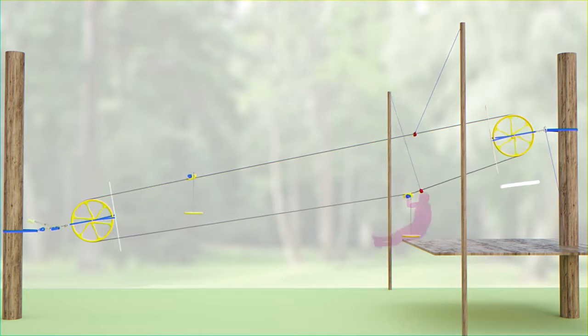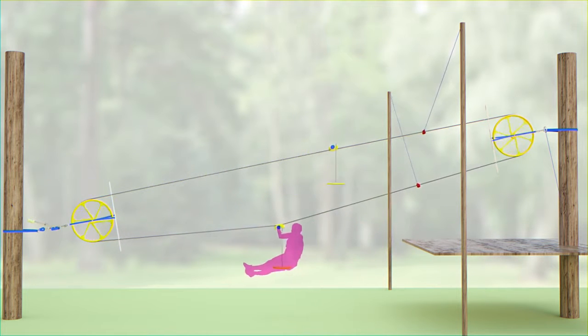Halfway down, riders will notice an empty seat far above them moving rapidly back up to the top on a taut wire.